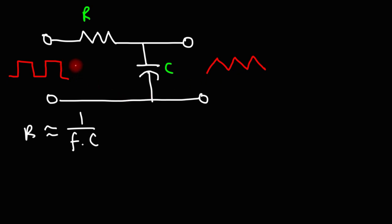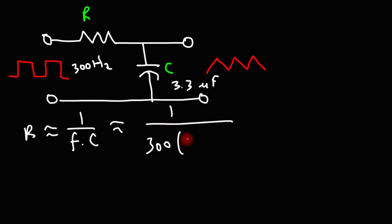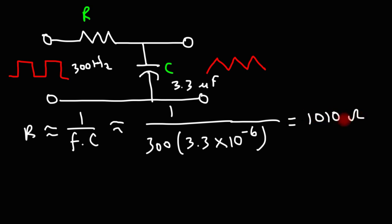So let's say the incoming square wave has a frequency of 300 Hz and the capacitance is 3.3 microfarads. What value of R should we use to get a good triangle waveform? Plugging in 300 Hz and 3.3 microfarads (3.3 × 10⁻⁶ farads), you should get approximately 1,010 ohms. So in this case, we could use a 1 kilohm resistor with the 3.3 microfarad capacitor, and that'll give us a decent triangular waveform if the frequency is 300 Hz.